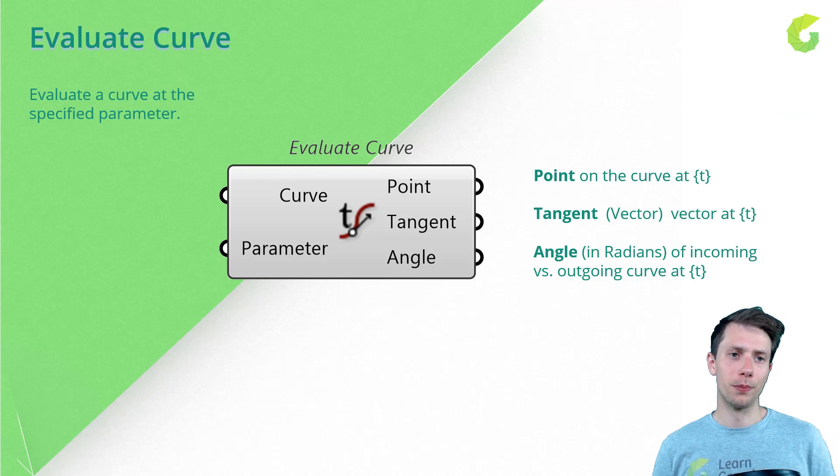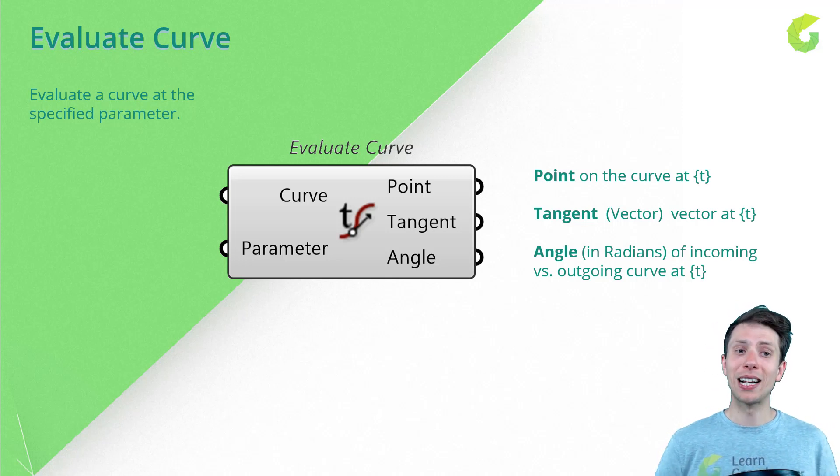Another useful component that I will show you soon is Evaluate Curve. Here in the input, you have a curve which will be re-parameterized and we have a parameter. In every specific parameter, we are going to check what is the point on that - the location of a point with X, Y, and Z coordinates. We're going to find the tangent, the vector. I will show you what the tangent means. And an angle in radians of incoming and outgoing curve at the parameter.